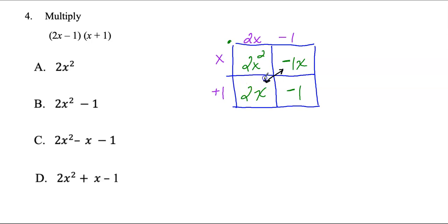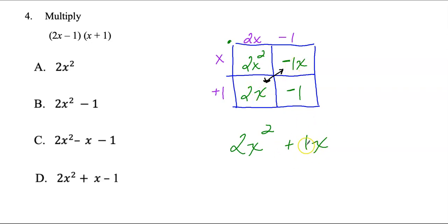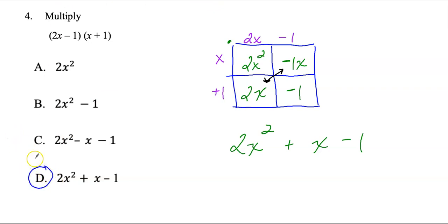Then I combine the diagonal terms — the like terms. I'll bring down 2x², combine 2x plus negative 1x to get plus 1x, and bring down minus 1. That gives me 2x² plus x minus 1. Either way I do this problem, my answer is D.